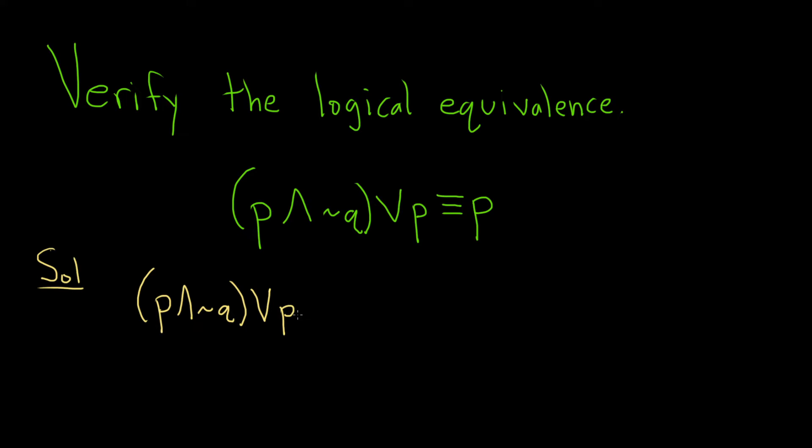To do this I'd like to use something called the absorption law. But before we do that typically we have to have the P on the left hand side. So what we can do is we can switch these and write this as P or P and not Q. And this is by something called the commutative law or commutative property.